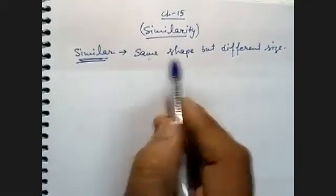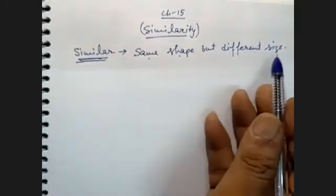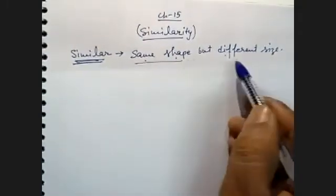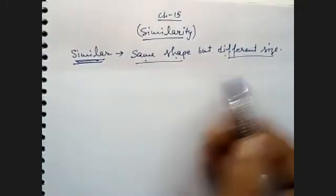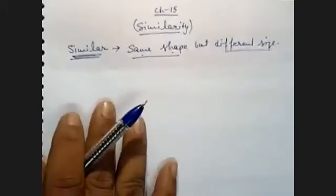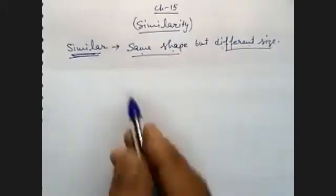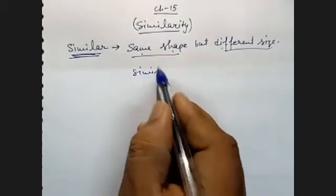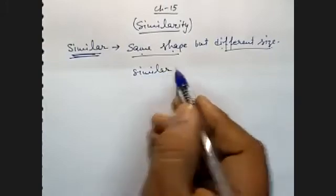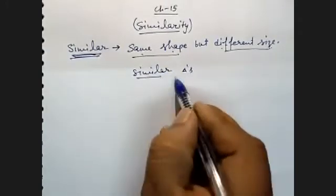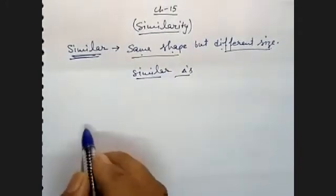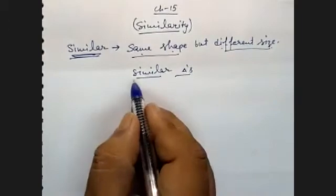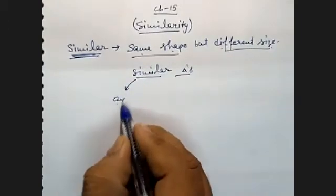Congruent means same shape and same size. But similar means same shape but different size. Now for similar triangles: the first condition is that angles are equal.